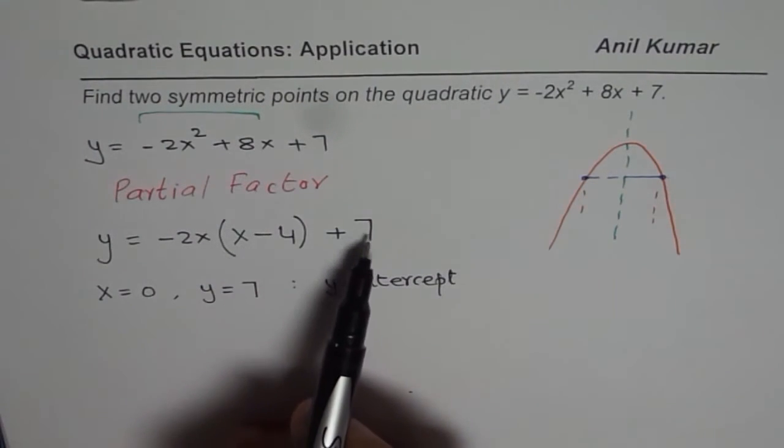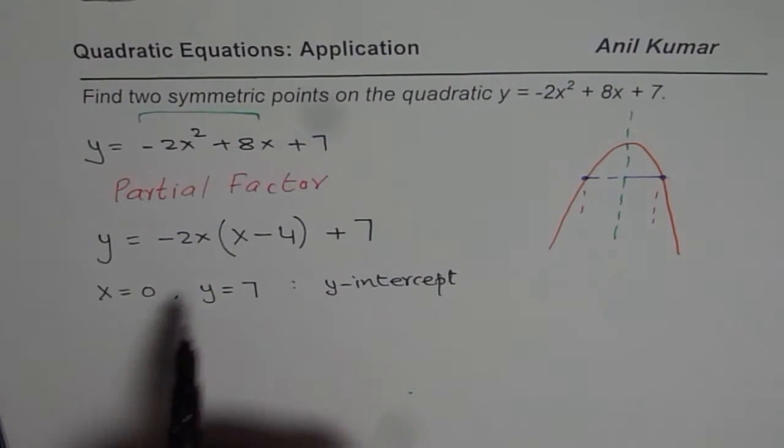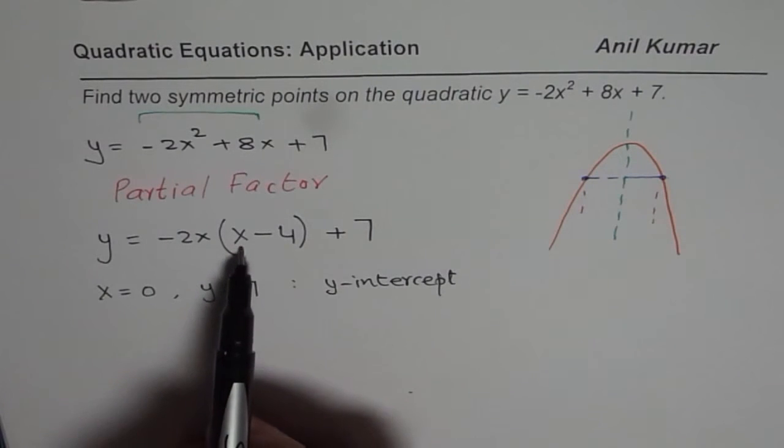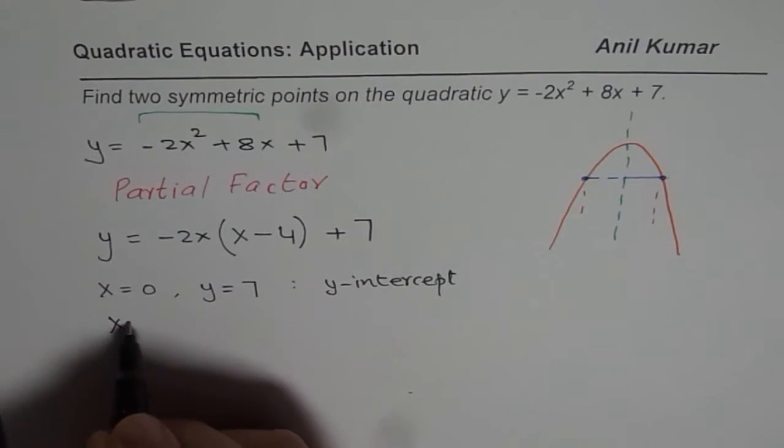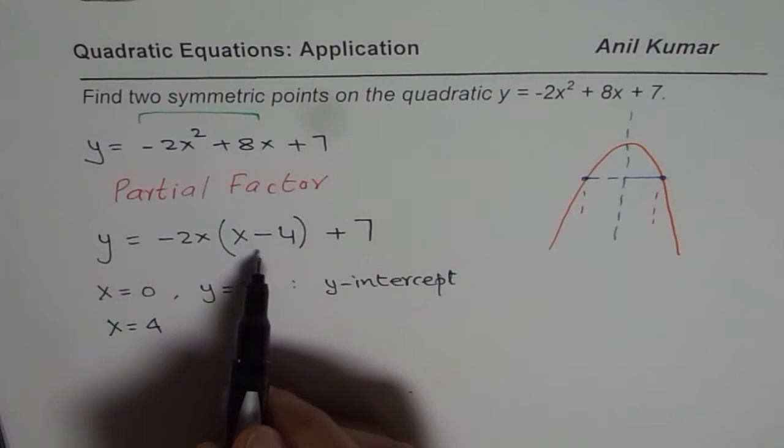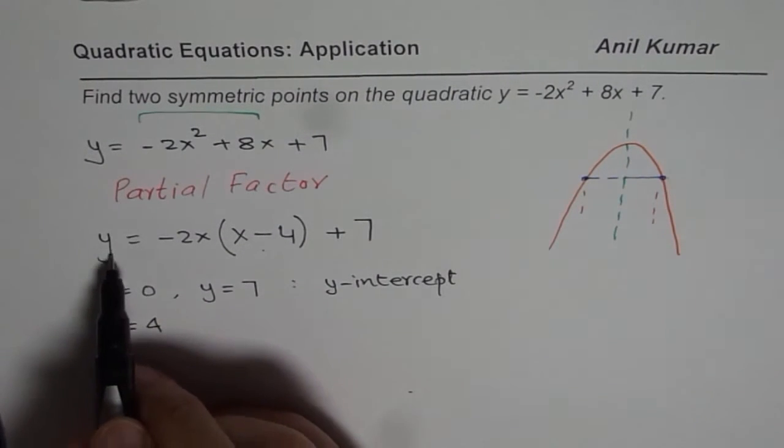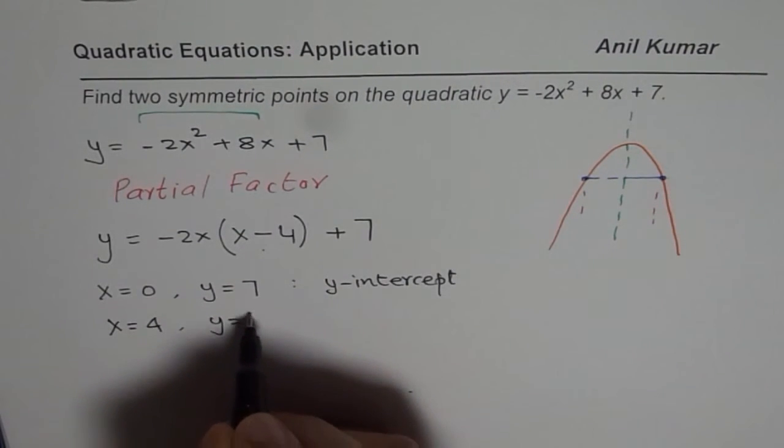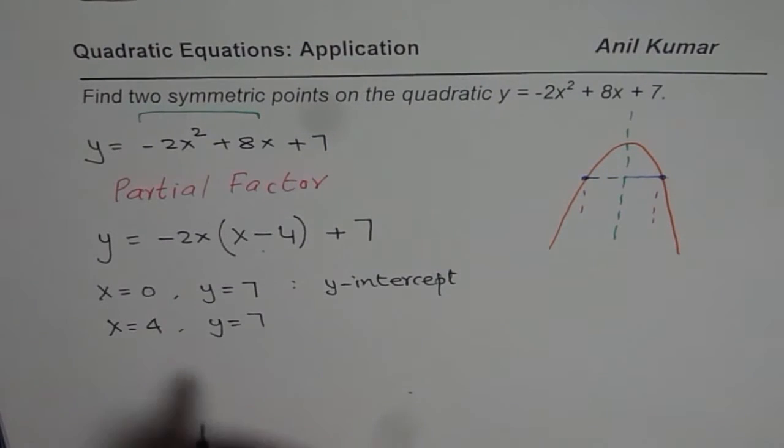Also, when can you get 7 from this equation? How about x = 4? That is the key. If I substitute x = 4, the second factor is 0. Even then, y = 7. And therefore, we got our answer.